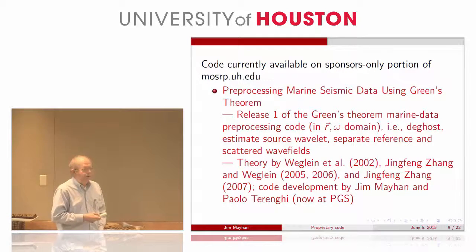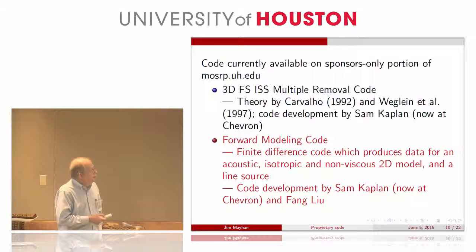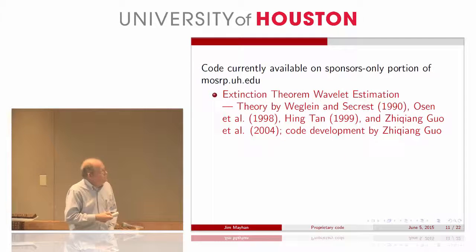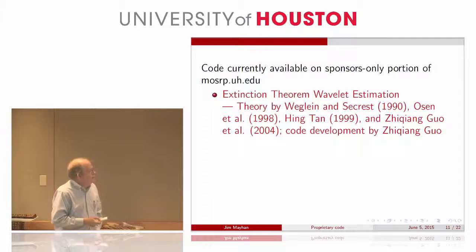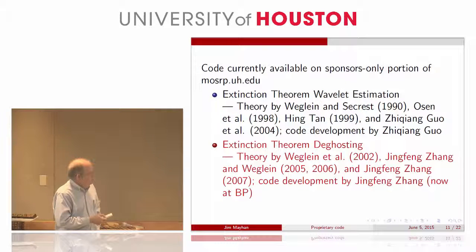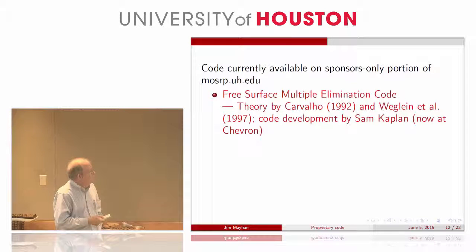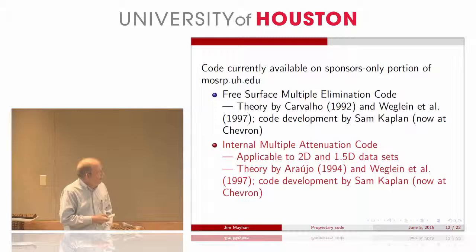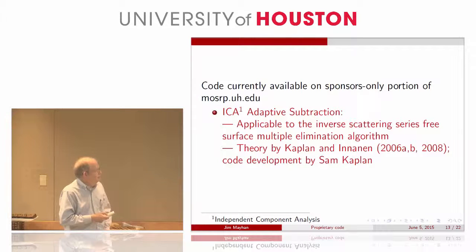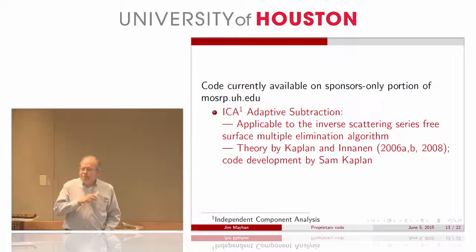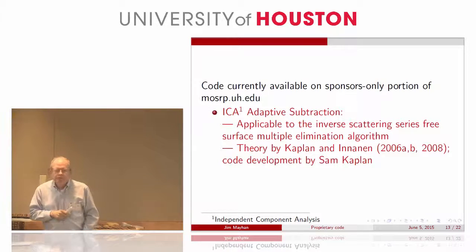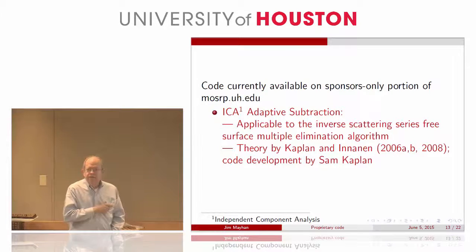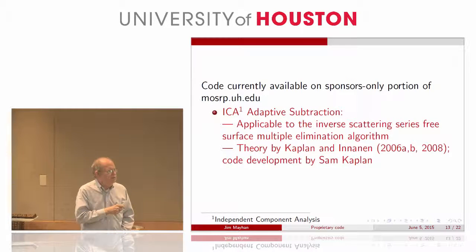We have forward modeling code — an earlier version of Von Luth's finite difference code. We have an earlier version of using Green's theorem, or extension theorem, to estimate the wavelet. We have Jing Fang Zhang's de-ghosting based on Green's theorem. We have the first release of the free surface multiple code, an early release of the internal multiple code, and adaptive subtraction developed by Kaplan and Eminen, specifically designed for the ISS free surface multiple application. You've seen a lot of Sam Kaplan and Paolo Terini in the code on the website.